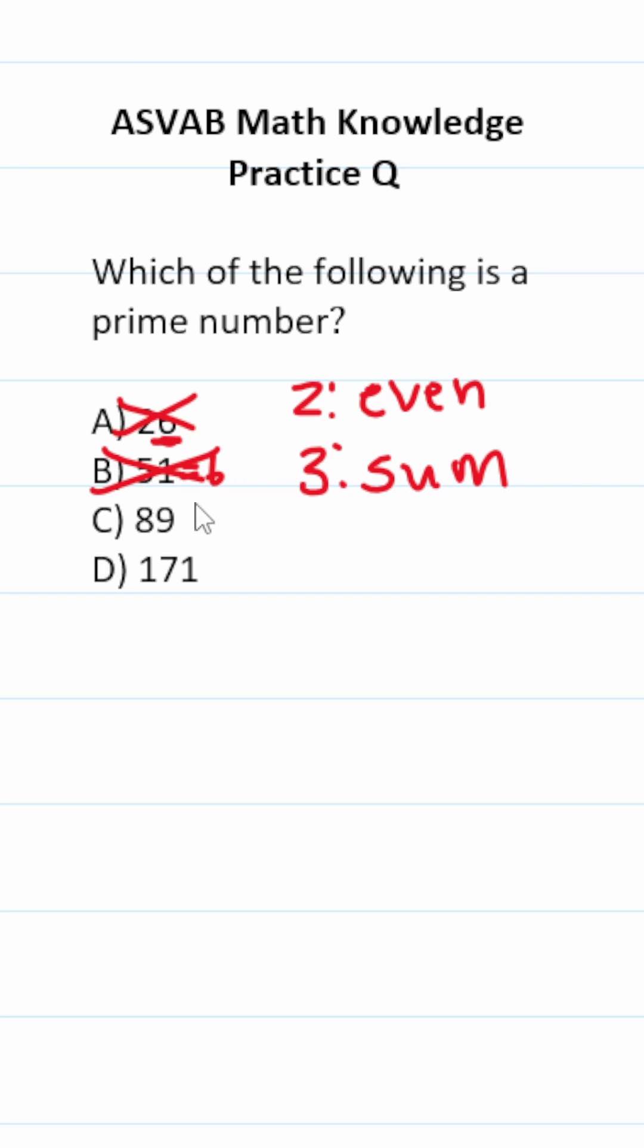Let's check 171. One plus seven plus one is nine. Nine is divisible by three, therefore 171 is also divisible by three and can't be prime. So the correct answer to this one is C, 89.